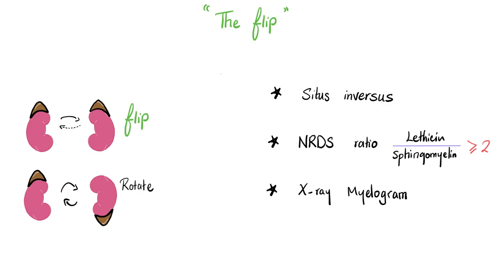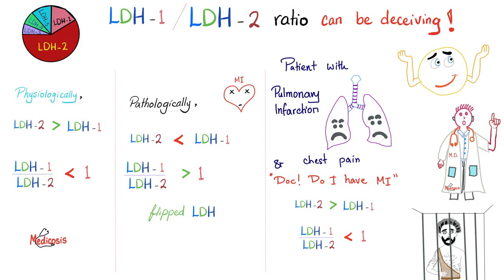In the old days, there was the x-ray myelogram: a dye was injected intrathecally and then doctors would flip the patient upside down to take another picture and compare the two to find obstructions or leaks. That's why the person who invented MRI is a hero — doctors no longer need to flip patients.